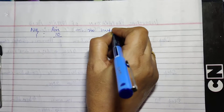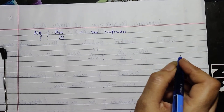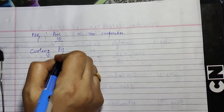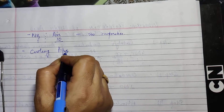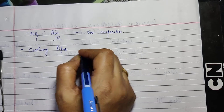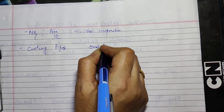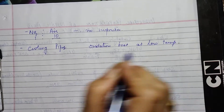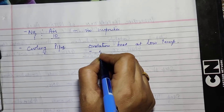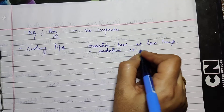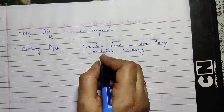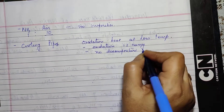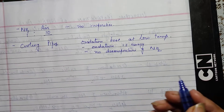We must ensure that the air does not contain any impurities, because otherwise the catalyst will be poisoned. The cooling pipes bring down the temperature because oxidation takes place best at a low temperature. When the temperature is low, first, oxidation is easier and more complete; and second, it minimizes the chances of decomposition of nitrogen dioxide, which may occur at a higher temperature.